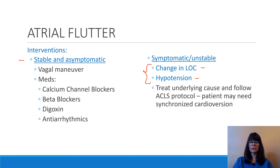This will hopefully slow everything down, including the patient's heart rate, and maybe convert back to normal sinus rhythm. Certain medications can also be used for patients in atrial flutter, including calcium channel blockers, beta blockers, digoxin, as well as antiarrhythmics.